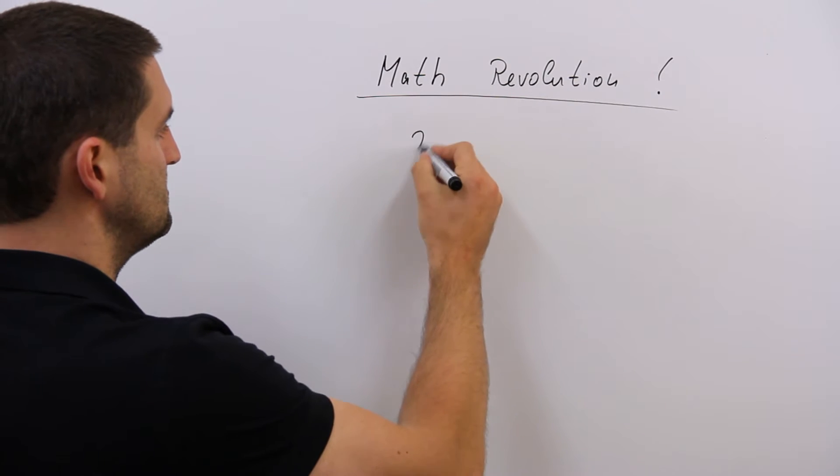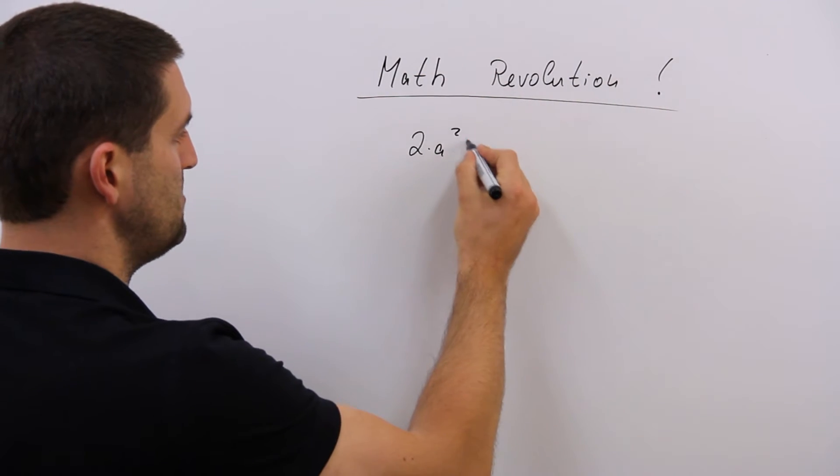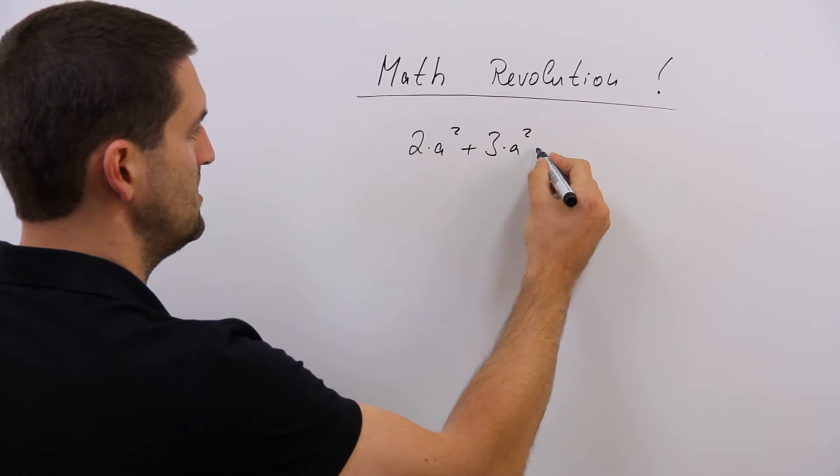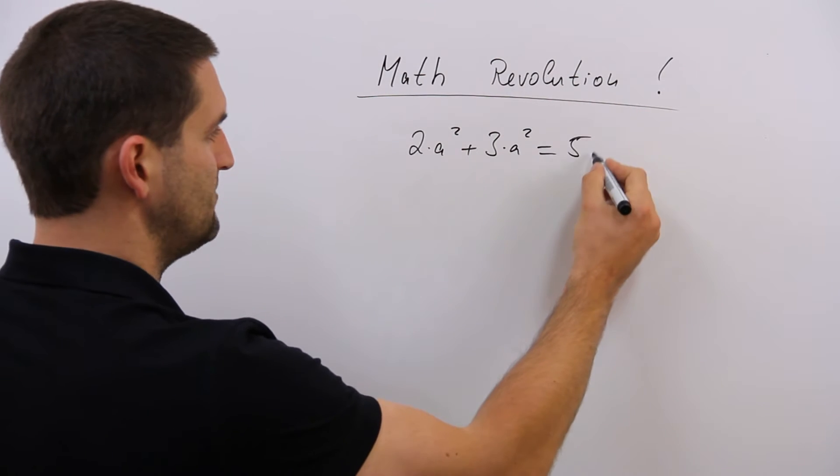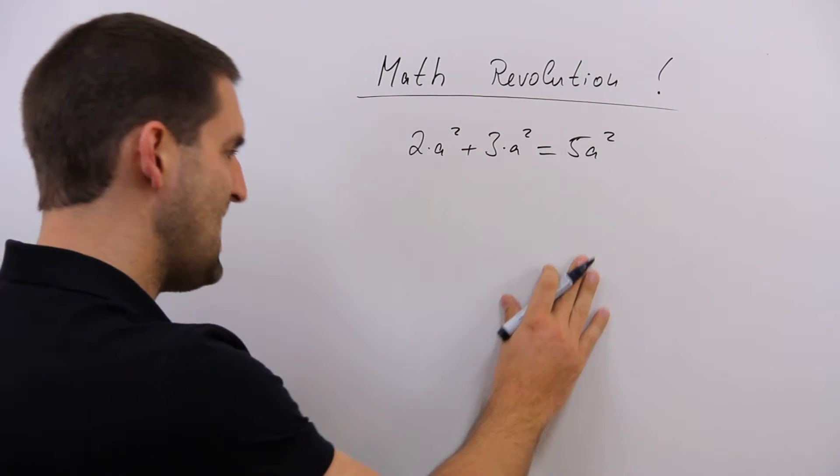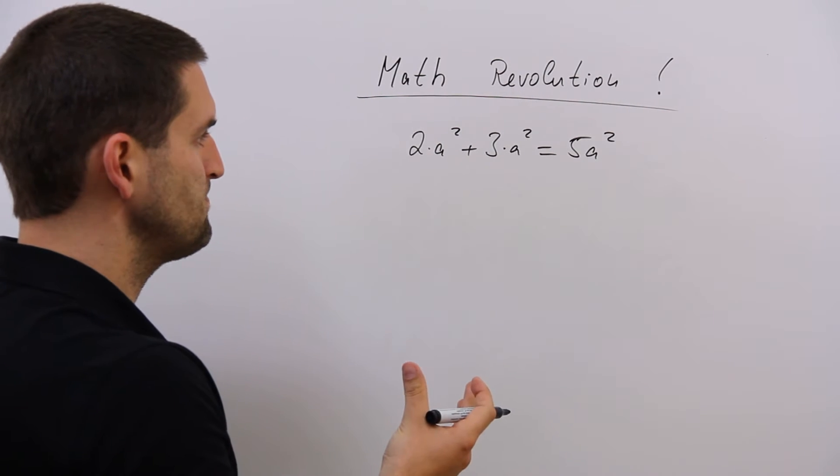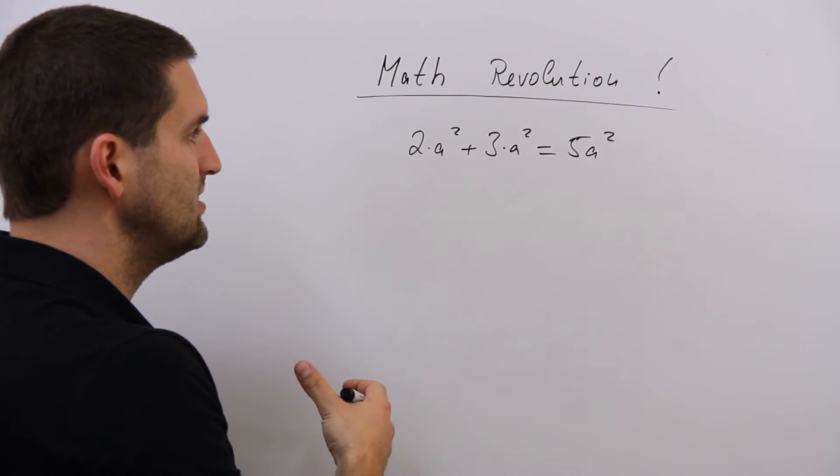Most people think it's 2 times a to the power 2 plus 3 times a to the power 2 is equal to 5 times a to the power 2. That's not the way we should teach it because math is about understanding structures and understanding things.